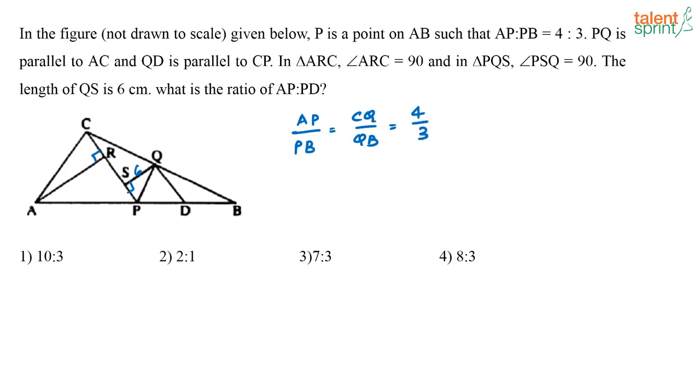Similarly, they have also given that CP is parallel to QD. So if you consider triangle PCB, right? In triangle PCB, what will happen? CP is parallel to QD, or I can say CQ by QB is equal to PD by DB. CQ by QB is equal to PD by DB.